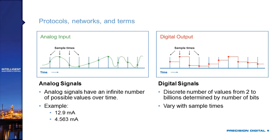A digital signal, by contrast, operates in time slices or sample times. At each time slice it takes a reading of the signal and provides a discrete output value. The values are limited to a discrete number of possibilities. In real-world applications with a 16-bit analog-to-digital converter, the number of discrete levels is huge and you won't really notice the difference — but it becomes relevant in Modbus communications.